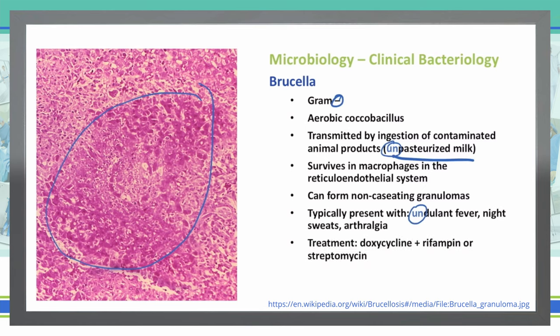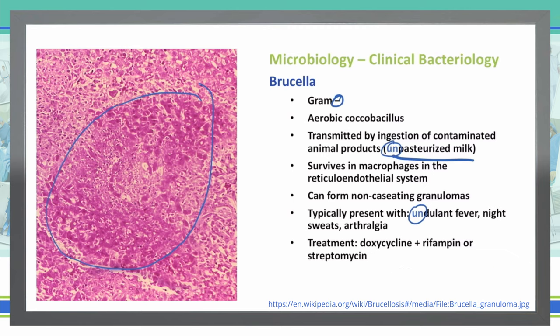To treat this, we're going to use doxycycline as well as rifampin or streptomycin, which are interchangeable. In the United States, outside of pasteurizing milk — which kills off these bacteria — cattle are tested every year for brucellosis, and if they are positive, they are often euthanized so that they don't spread it to the rest of the herd.